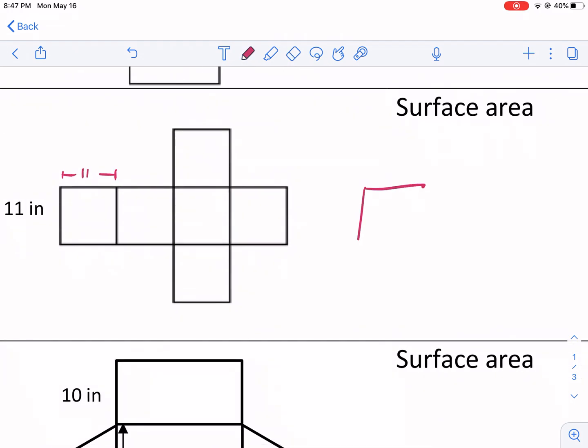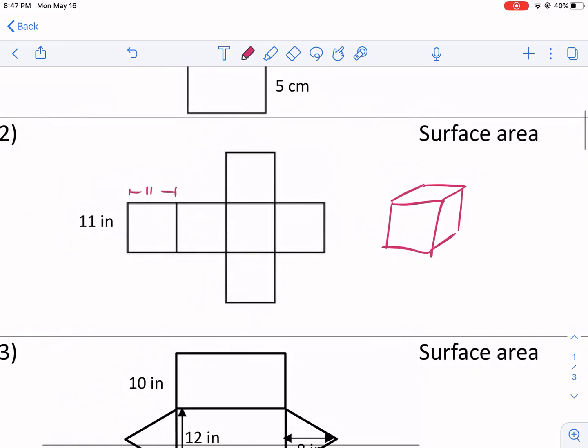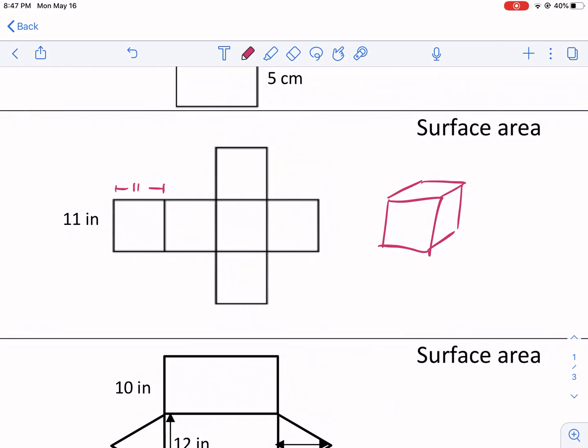As you fold it up, it's going to have six sides, all the same size. Each face will have the same exact dimensions, just like a dice would have. So we have these dimensions here, 11 by 11 for this cube. This is the net, and we just need to find the surface area. Surface area is all the two-dimensional space that these faces have combined.